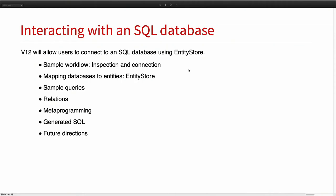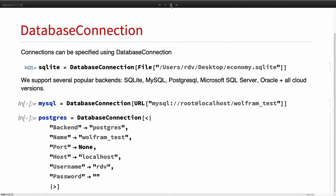Let's start to understand how all of this connects to SQL databases. During this talk, we will go through a very simple workflow. Right now the functionality is limited to reading only a database, so we will tell you how to do that. There are several functions: the declaration of the connection called DatabaseConnection, then DatabaseInspect to see what's in the database, how we map the database to entities, sample queries, dealing with relations, metaprogramming to generate SQL easily, and future directions.